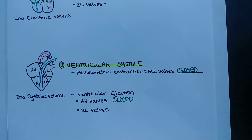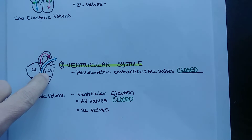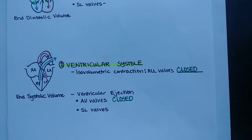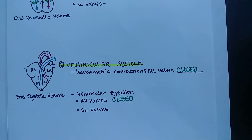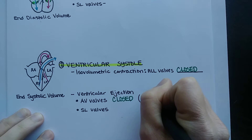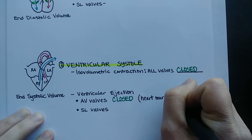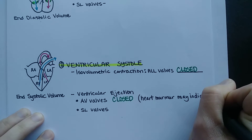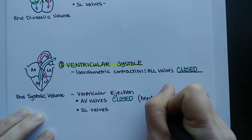If there is a problem with the AV valves, blood being ejected could squirt back into the left atrium — this is called mitral valve prolapse, specifically if it occurs on the left side. This may be heard as a heart murmur, which can indicate a valve problem.